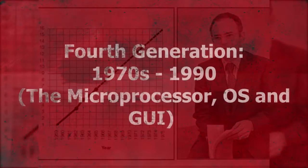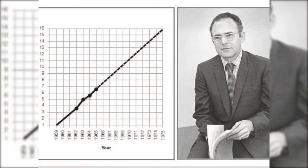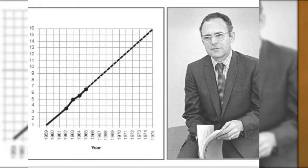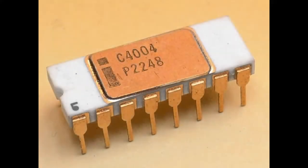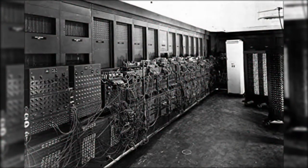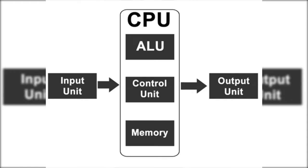Fourth generation of computers, 1970 to present, the microprocessor, OS, and GUI. The birth of the microprocessor was also the birth of the microcomputer, fulfilling Moore's Law of exponential transistor growth starting in 1965. Intel engineers Ted Hoff, Federico Faggin, and Stan Mazor in November 1971 introduced the world's first single-chip microprocessor, the Intel 4004, boasting 2,300 transistors. What in the first generation filled an entire room could now fit in the palm of the hand, and the new microchip was as powerful as the ENIAC from 1946. It merged functions like CPU, memory, and input/output controls.